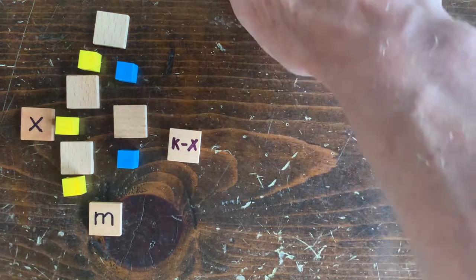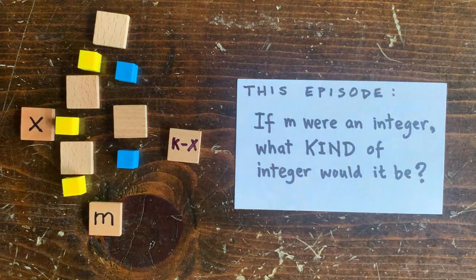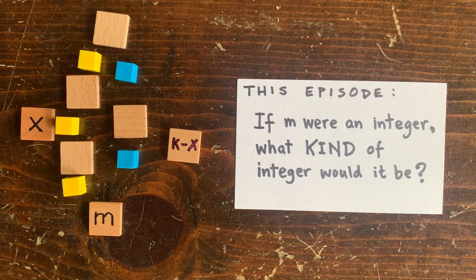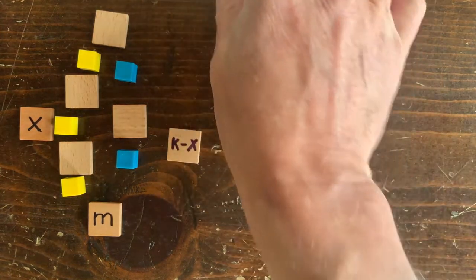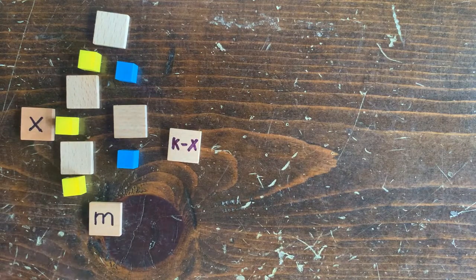In this episode, let's assume m is an integer and ask what kind of integer would it have to be. And let's start by looking at what happens to m when we send it through, say, these 5 operations.